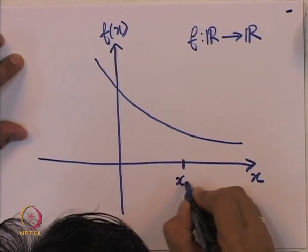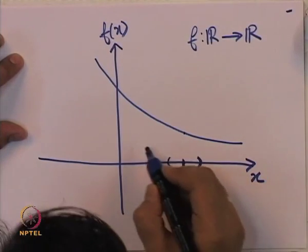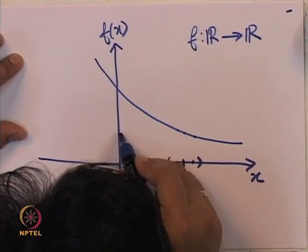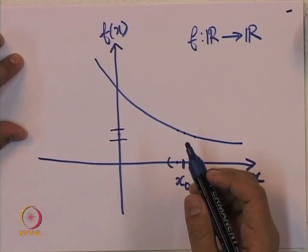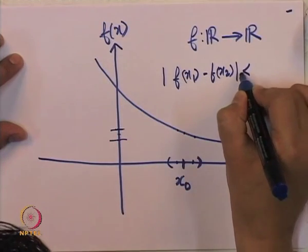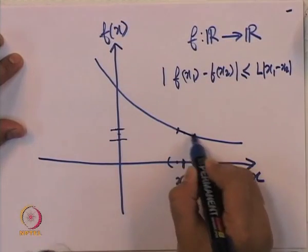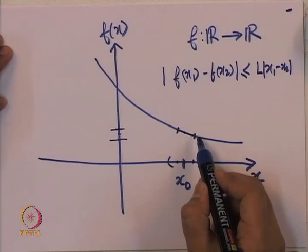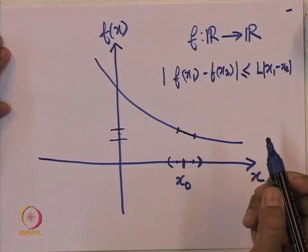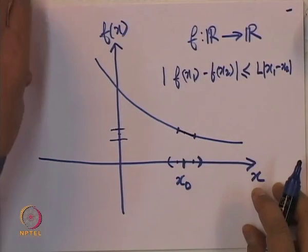To say a function is locally Lipschitz at a point means we should be able to find an open interval such that for any two points inside that interval, the corresponding function values satisfy the inequality: |f(x1) - f(x2)| ≤ L|x1 - x2|. This inequality means that if we connect those two points by a line, the slope of this line should have absolute value at most L. We need to find a number L that puts an upper bound on the absolute value of the slope.